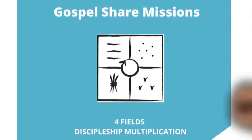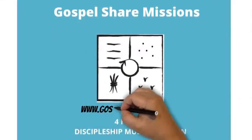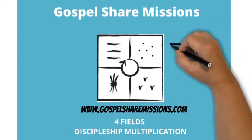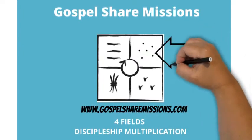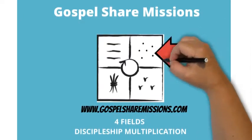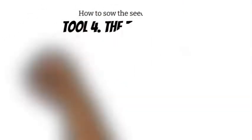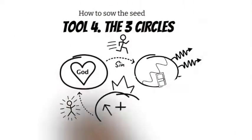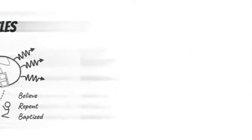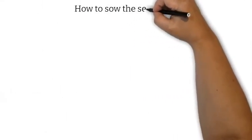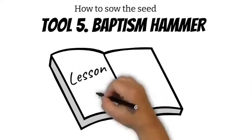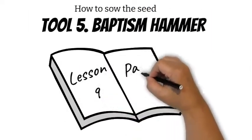Welcome to Gospel Share Missions Four Fields Discipleship Multiplication Training. Field number two, the seeded field — how to sow the seed? In the last lesson, we studied tool number four, the three circles. Now this is tool number five, the baptism hammer, lesson number nine, page 12 in your training manual.